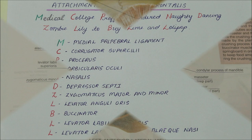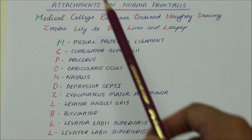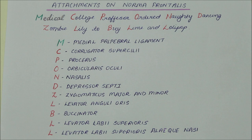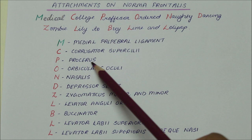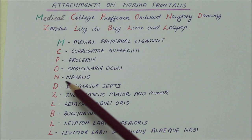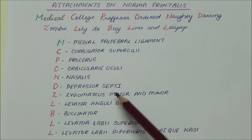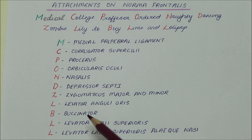An easy way to remember the attachments on the Norma frontalis is the sentence: 'Medical College Professor Ordered Naughty Dancing Zombie Lily To Buy Lime And Lollipop.' Red color indicates the origin of muscles while green indicates the attachment of muscles. M = medial palpebral ligament attachment, C = corrugator supercilii, P = procerus, O = orbicularis oculi, N = nasalis, D = depressor septi, Z = zygomaticus major and minor, L = levator anguli oris, B = buccinator, L = levator labii superioris, L = levator labii superioris alaeque nasi.